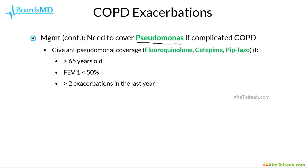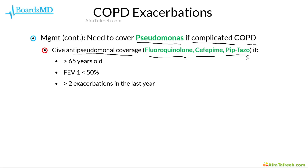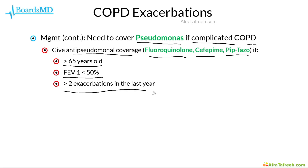It is also important to consider whether we need to cover Pseudomonas, as this is the case in patients who have what we refer to as complicated COPD. We will give antibiotics with anti-pseudomonal coverage — for example, fluoroquinolones, cefepime, or piperacillin-tazobactam — if the patient meets at least one of the following criteria: being greater than 65 years old, having an FEV1 less than 50%, or having more than two exacerbations in the past year, as any of these criteria indicates complicated COPD with a higher risk of Pseudomonas infection.